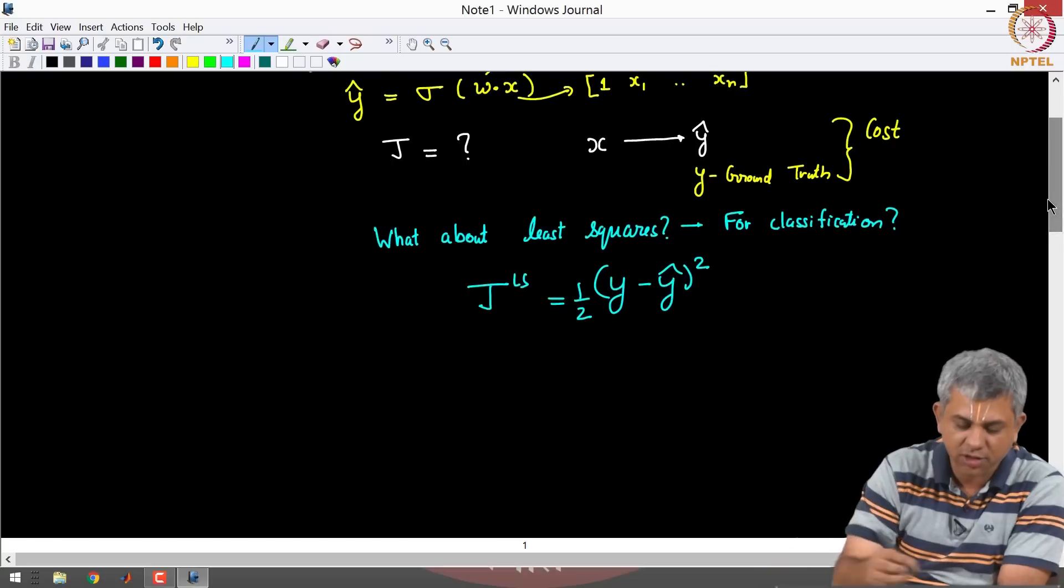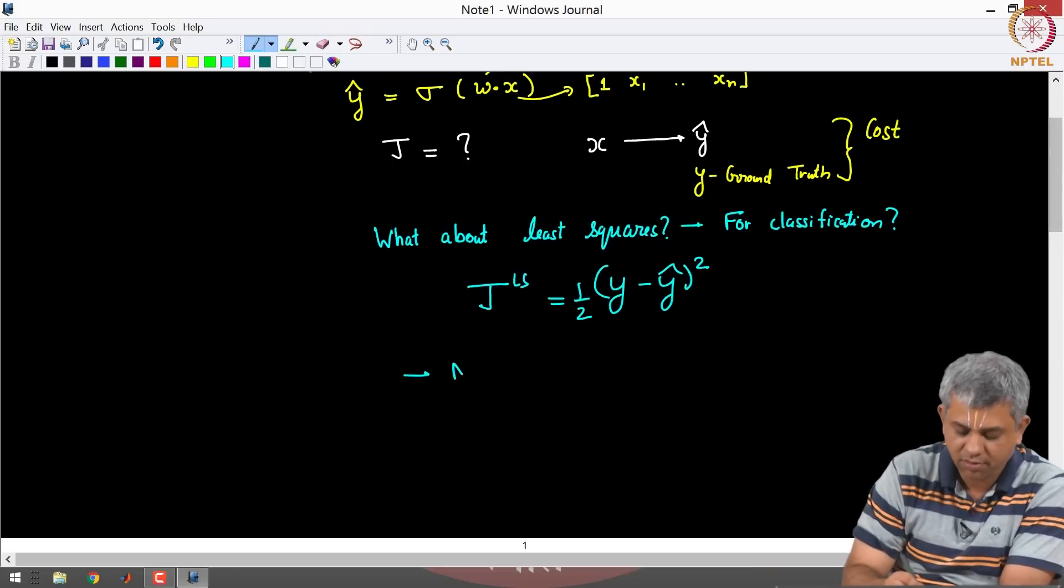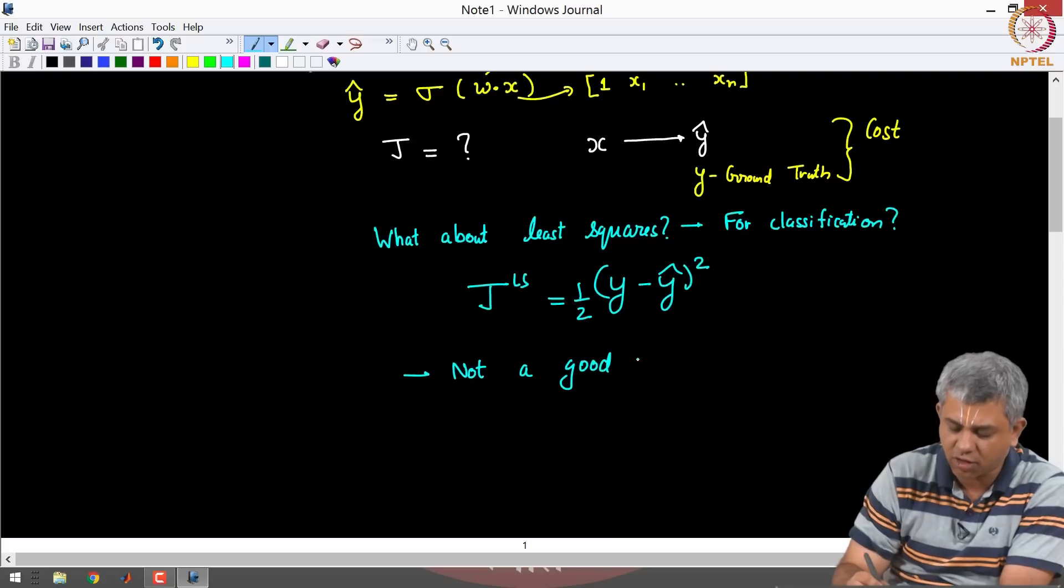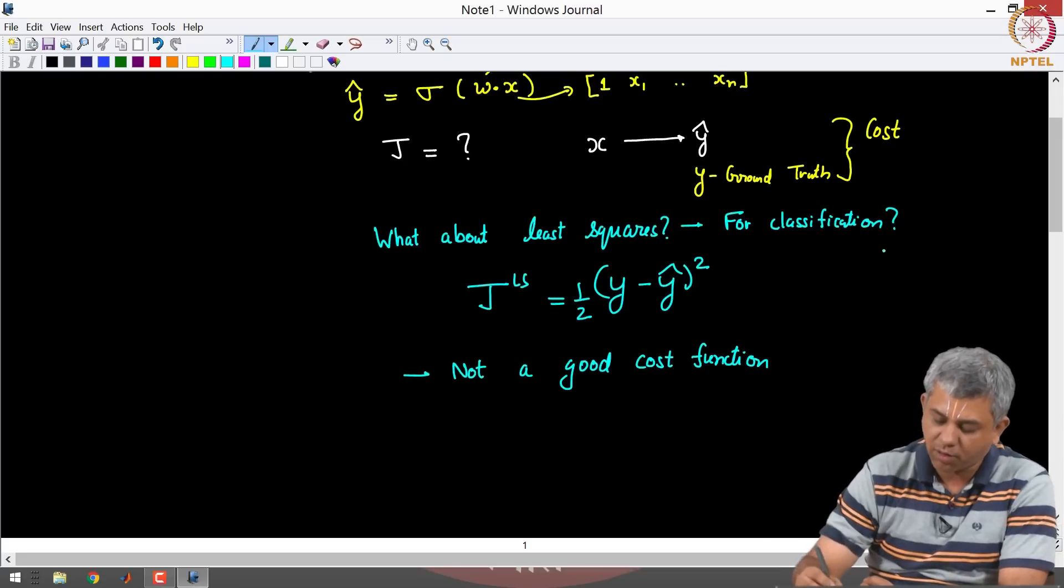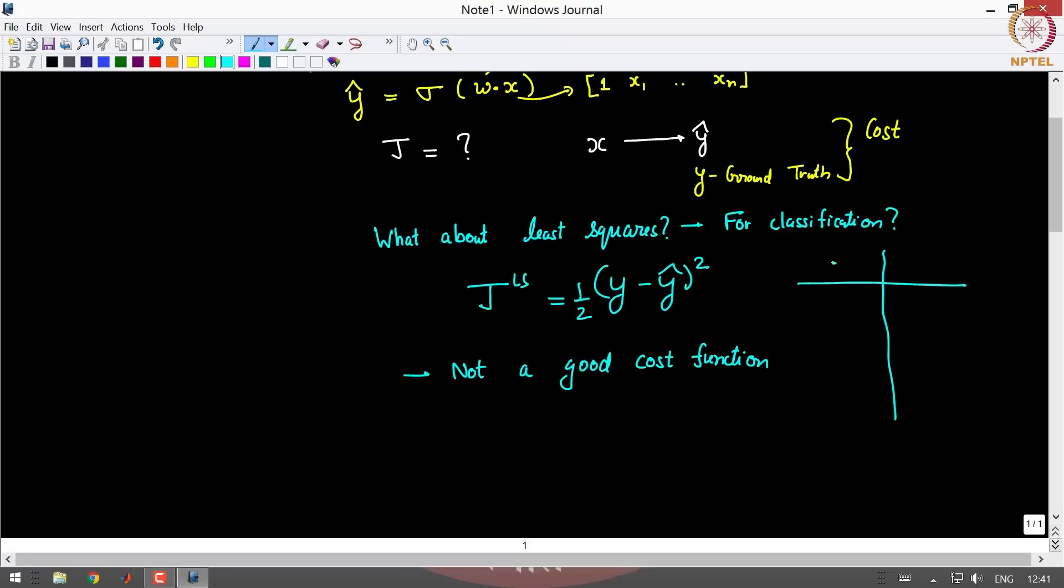It turns out that this is not a good model. It is not a good cost function or at least it is not an optimal cost function for several reasons. I will just mention one. Now if you recall in a binary classification problem for a given X, the ground truth Y and even Y hat, all of these Y is either 0 or 1. Y hat lies between 0 and 1, some decimal number.